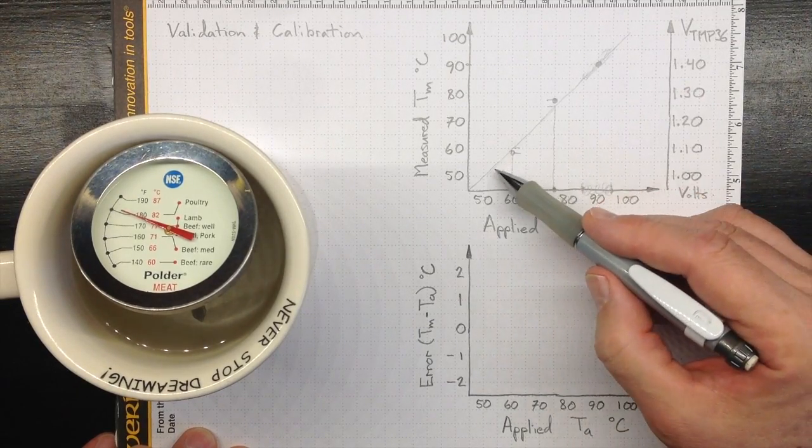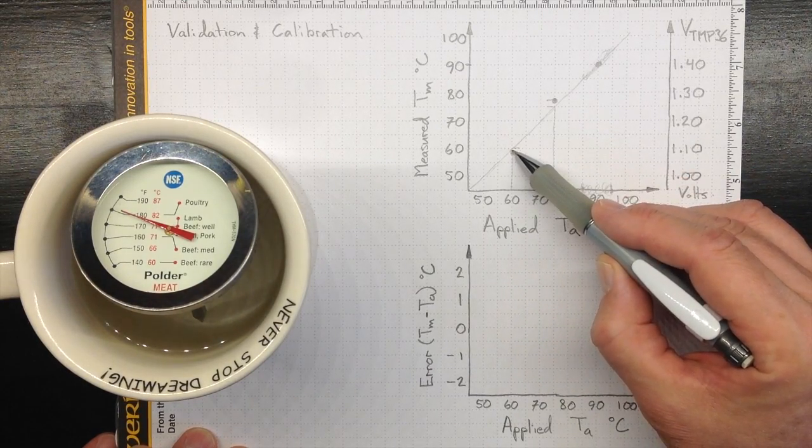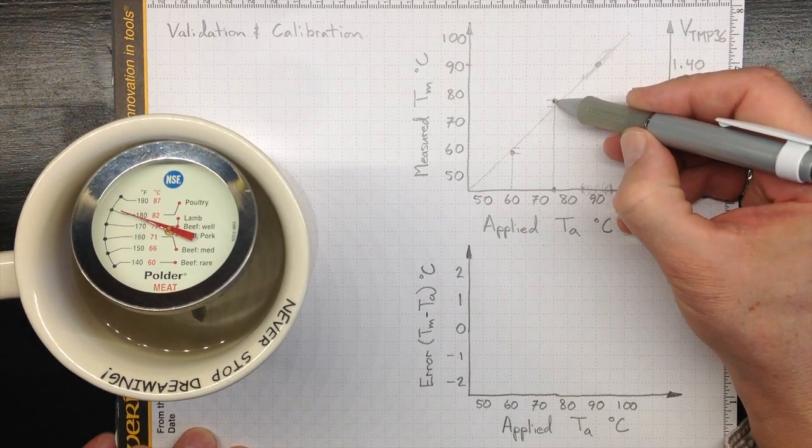Now, in most cases, if your instrumentation is any good, you won't really see these errors when you draw a graph like that. That would be an error of, say, 2.5 degrees Celsius. That's a pretty big error in your measurement system.